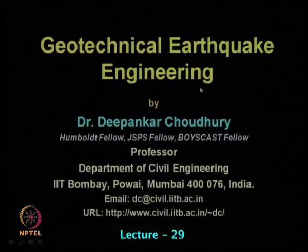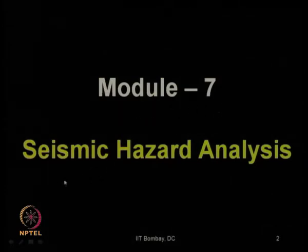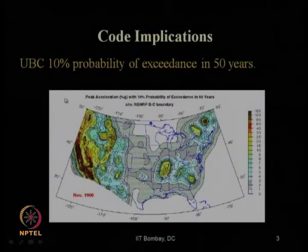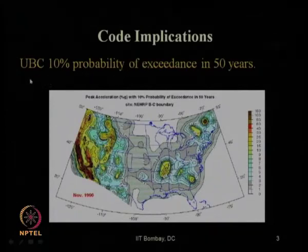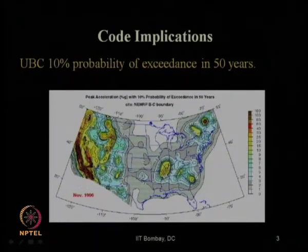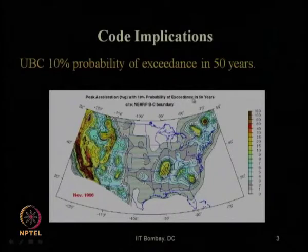Let us start today's lecture for the NPTEL video course on geotechnical earthquake engineering. We are going through module 7, which is on seismic hazard analysis. A quick recap of what we have learnt in our previous lecture: the application in seismic design codes worldwide of seismic hazard curves. UBC suggests 10 percent probability of exceedance in 50 years, with this map showing peak acceleration values for a 475-year return period.